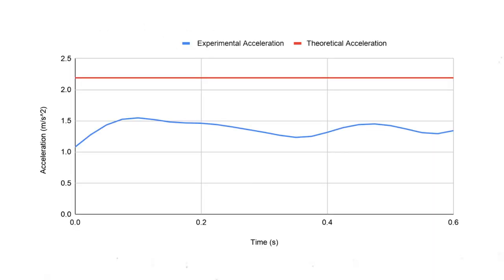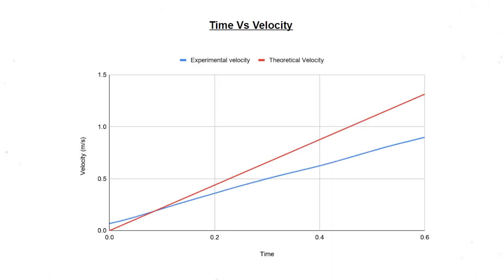From the theoretical acceleration versus time graph, we see that there is a linear relationship which indicates a constant acceleration of 2.19 meters per second squared. Both the theoretical and experimental data follow the same shape, meaning our findings respect the mechanics of dynamics. However, we can see a slight difference between the graphs. From the graph, we can see that there is a directly proportional relationship between the theoretical velocity and time. Both the theoretical and experimental data follow the same shape, but if we compare the experimental velocity against time to the theoretical, the experimental is relatively close but slightly off.